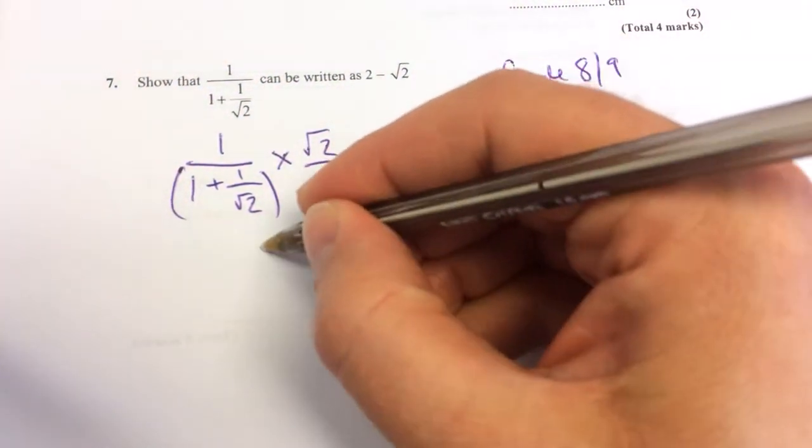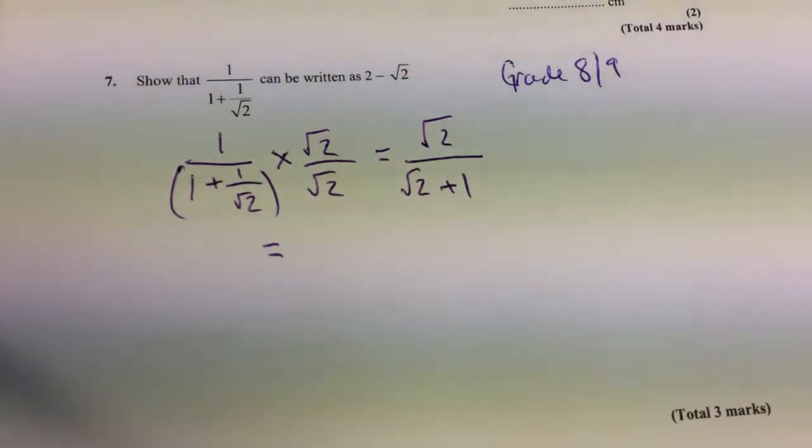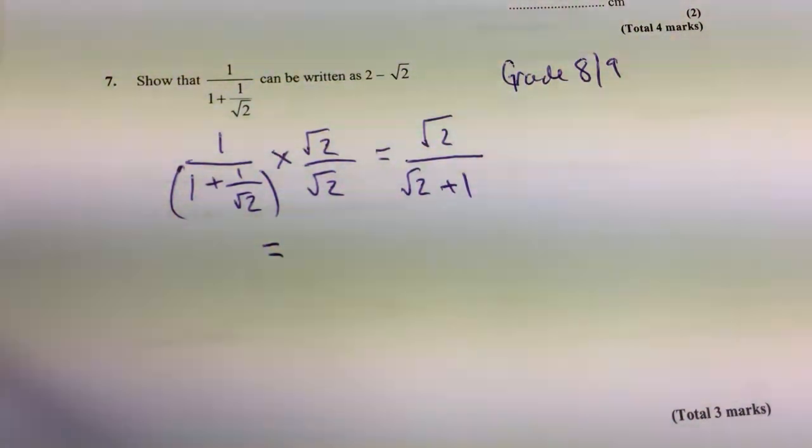This is the one to look at. Then again, you just need to times it by your denominator, but different. Almost like the conjugate of it.